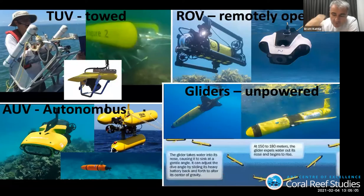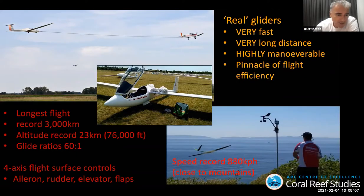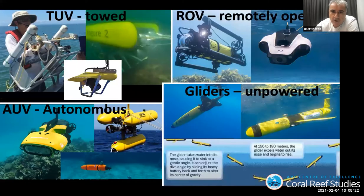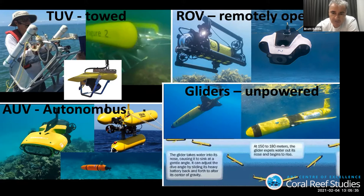Gliders can fly extremely long, high, and fast — all the rest of it — because they are very efficient in their flight control surfaces. They are a proper airplane using ailerons, rudders, elevators, and flaps. When you contrast that with the kinds of things that we put in the water, some of them are more appropriately called a brick on a string. Even the ones closest to underwater flight rarely use this combination of wings, ailerons, rudders, and elevators.